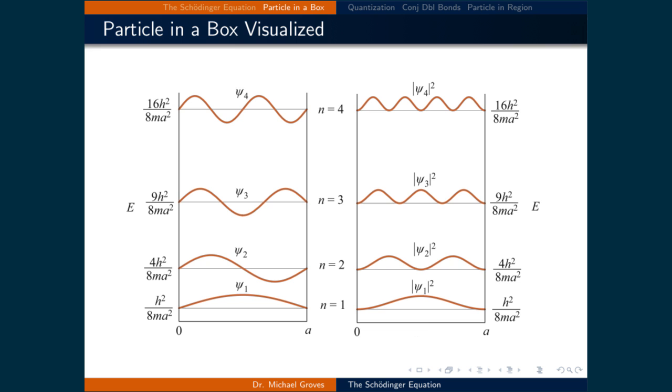Notice that the energy increases with n and only occurs at discrete or quantized levels. On the right is a plot of psi star psi, denoted the absolute value of psi.